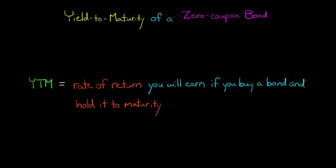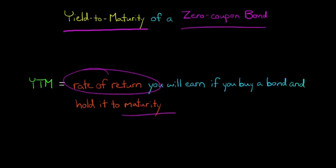In this video, we're going to talk about how to calculate the yield to maturity on a zero-coupon bond. The yield to maturity is the rate of return that you would get if you purchased a bond at its current price and then held the bond to maturity.